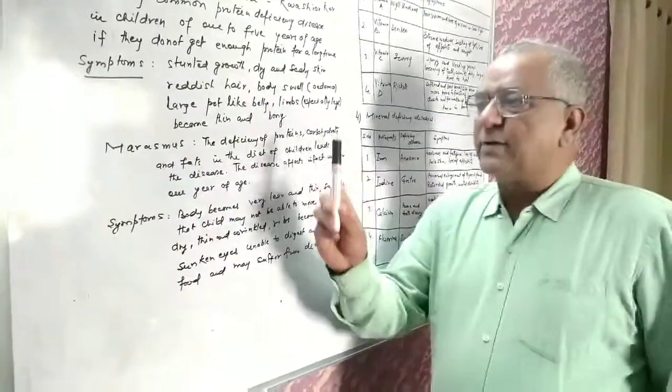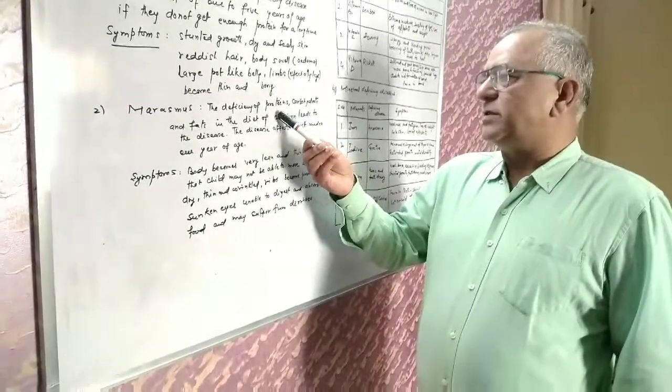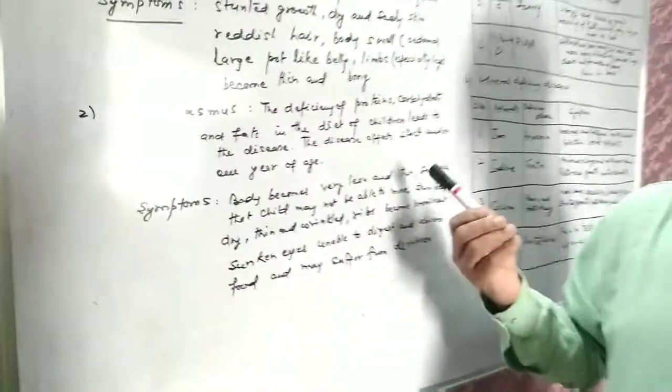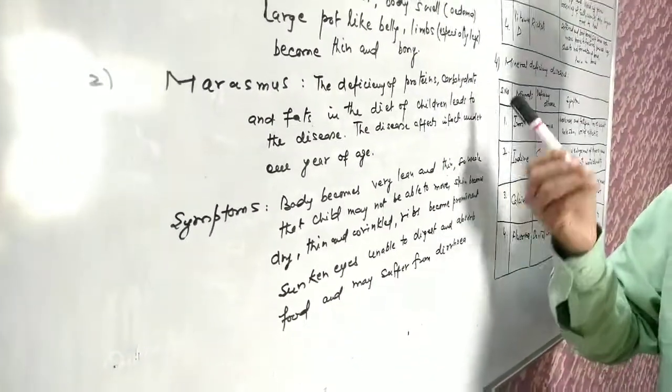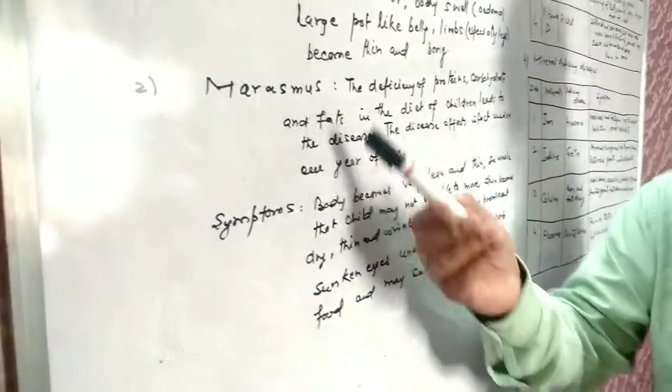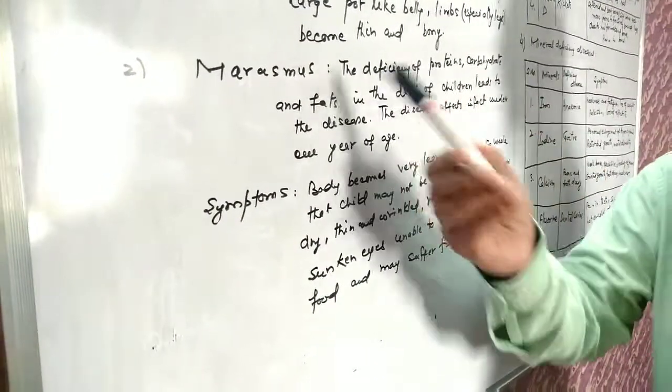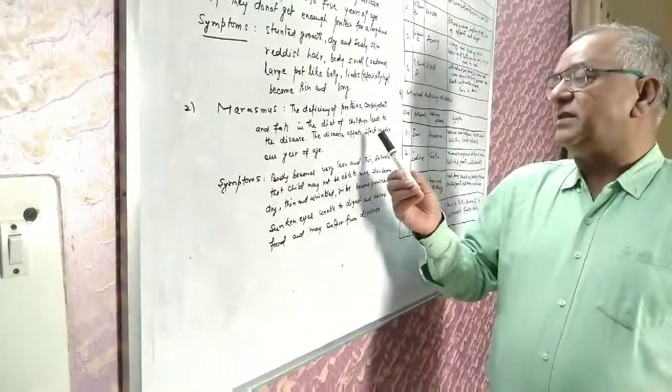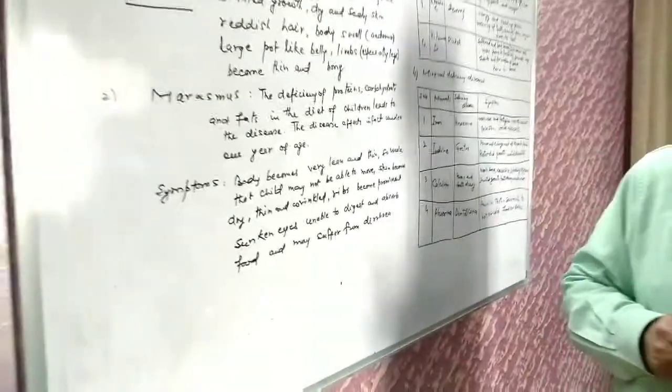Marasmus is overall deficiency of dietary proteins, carbohydrates and fats. This is also known as malnutrition. The deficiency of proteins, carbohydrates and fats in diet of children leads to this disease. The disease affects infants under one year of age.